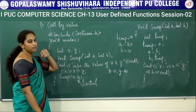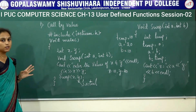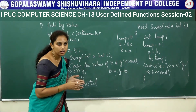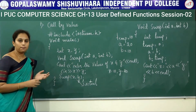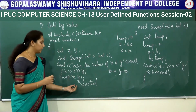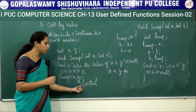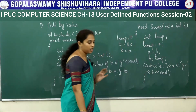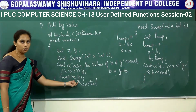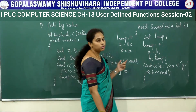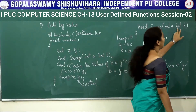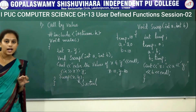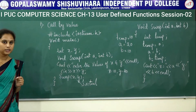So what is call by value? In this type of passing parameters to a function, the function copies the exact value from the actual parameters to the formal parameters. The values of x and y, that is 10 and 20, are copied to the formal parameters a and b respectively. This method is called call by value.